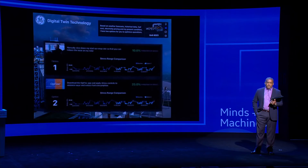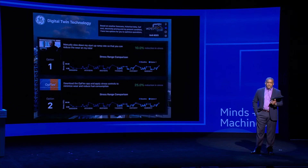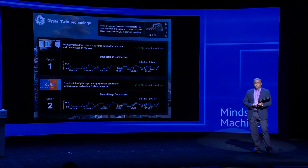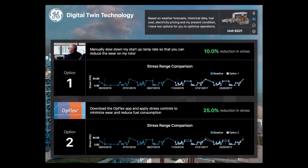Twin, give me options for mitigating that rotor damage. Based on weather forecasts, historical data, fuel cost, electricity pricing, and my present condition, I have two options for you to optimize operations. Option one is to manually slow down my startup ramp rate to reduce wear on my rotor. Option two is to download the OpFlex app and apply stress controls to minimize wear and reduce fuel consumption.